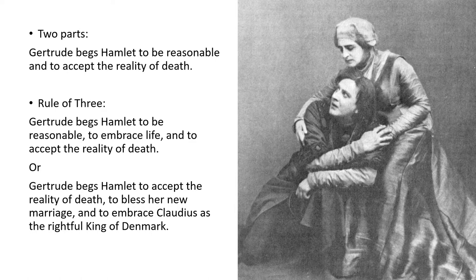Here's a two-part sentence that feels like it's missing something. The two things that Gertrude begs Hamlet to do fall short of giving the thought the full treatment it deserves. So here's a three-part version: 'Gertrude begs Hamlet to be reasonable, to embrace life, and to accept the reality of death.' Or: 'Gertrude begs Hamlet to accept the reality of death, to bless her new marriage, and to embrace Claudius as the rightful king of Denmark.' Both of these sentences provide a broader picture of Gertrude's desires and motivations, and they employ a three-part structure that makes them feel more complete than the two-part version.